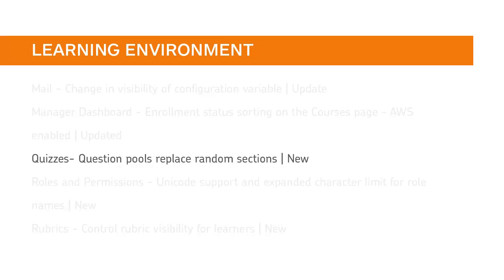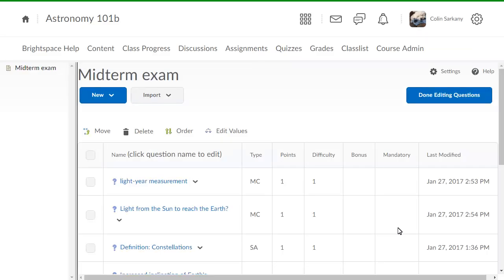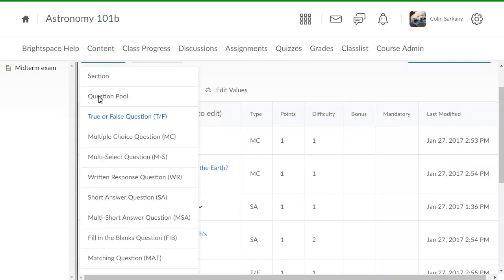Random Sections has become Question Pools. All existing functionality is included in a new, simplified workflow. When editing or adding questions to a quiz, click New and select Question Pool.